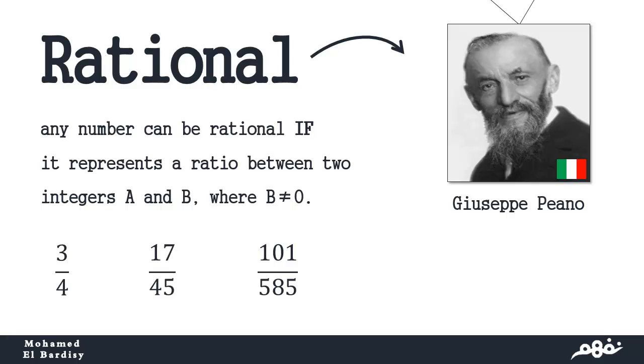17 over 45, 101 over 585. And this term was first released by the Italian mathematician Giuseppe Peano.